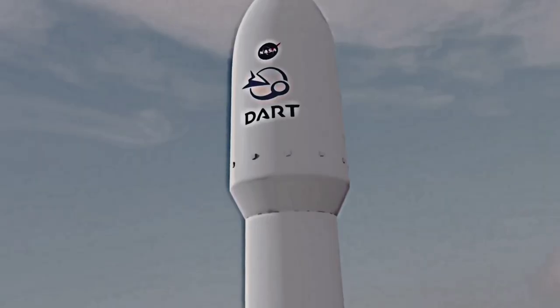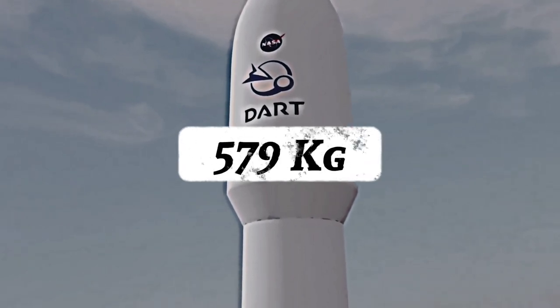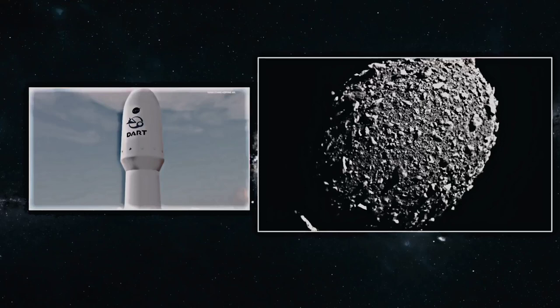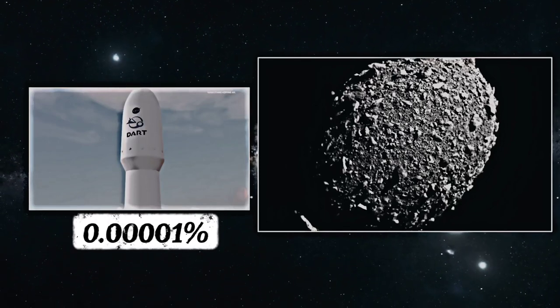On the other hand, the DART spacecraft is quite light, weighing only 579 kilograms. In comparison to Dimorphos, DART's mass is only about 0.00001%.